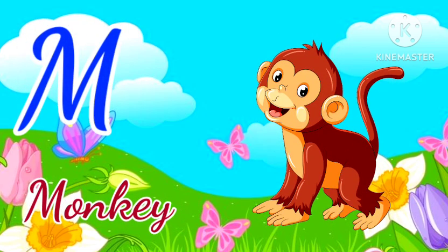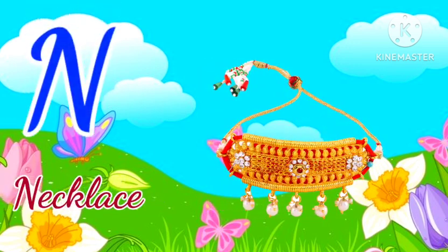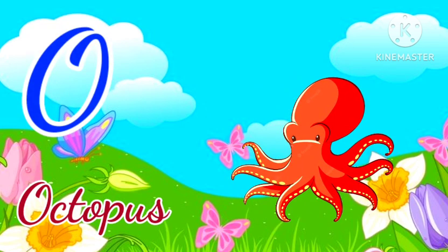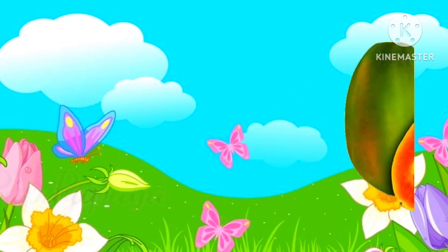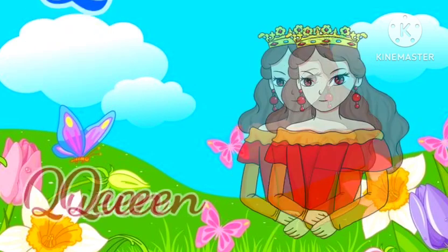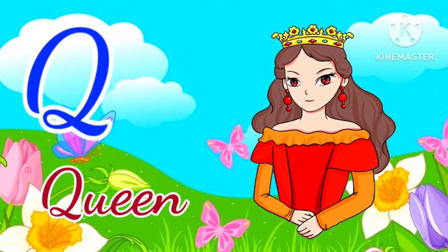M for monkey, monkey means bandar. N for necklace, necklace means necklace. O for octopus, octopus means octopus. P for papaya, papaya means papita.